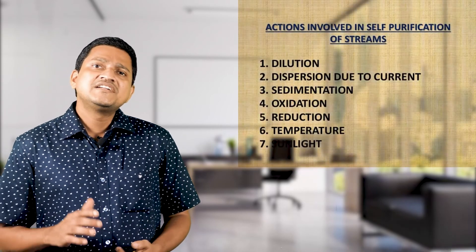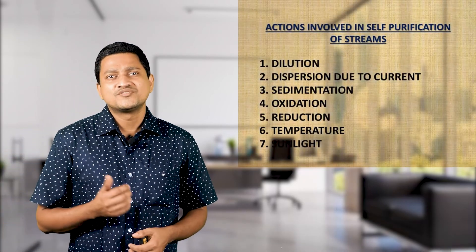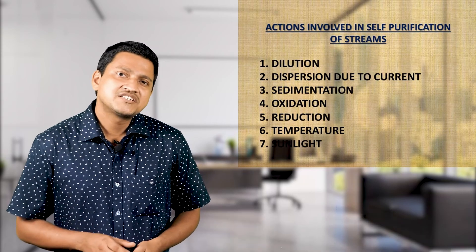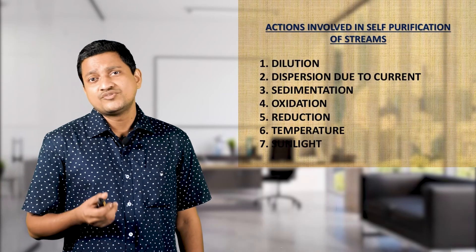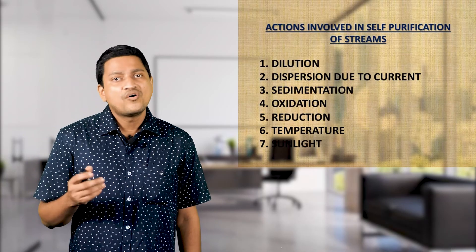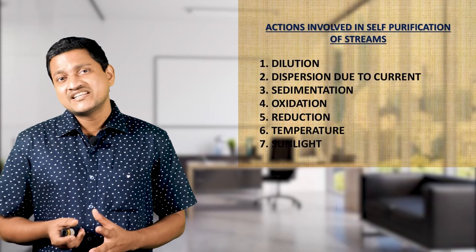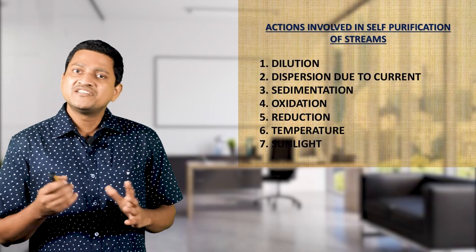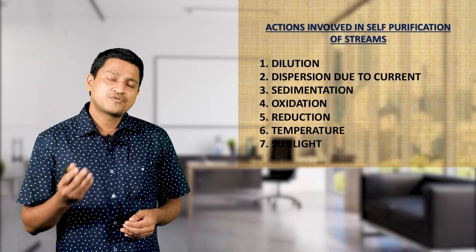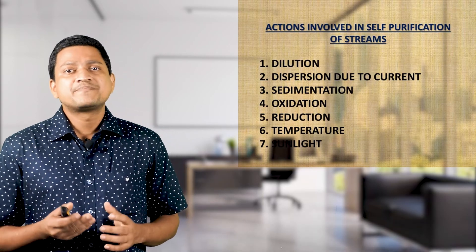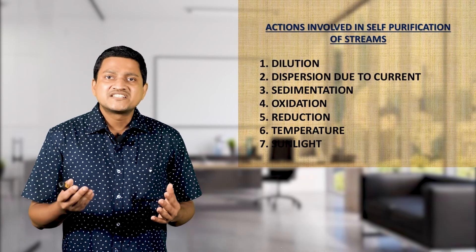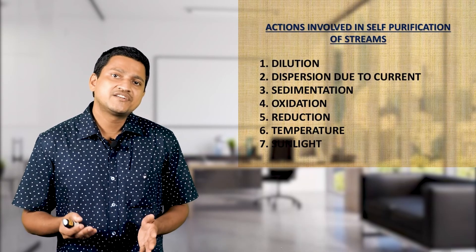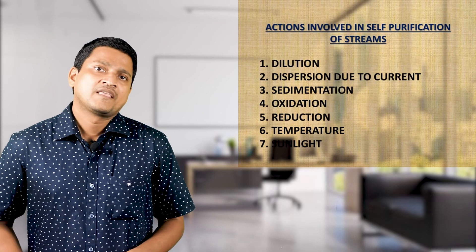There are different actions involved in self-purification of a stream. These include: dilution, dispersion due to current, sedimentation, oxidation, reduction, temperature, and the presence of sunlight. These are the components related to the self-purification of a river.